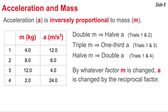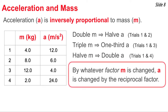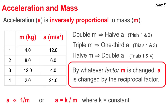Now we're going to look at the concept that acceleration is inversely proportional to the mass. As you see in the data table, when the mass is doubled, the acceleration is halved. When the mass is tripled, the acceleration becomes one-third of the original value. And when the mass is halved, the acceleration is doubled. So by whatever factor the mass is changed, the acceleration is changed by the reciprocal factor. We state this as A is proportional to 1 over mass, or as an equation, A equals k divided by mass, where k is a constant of proportionality.